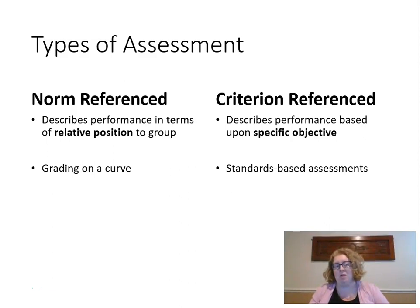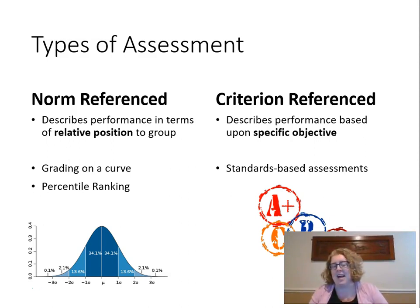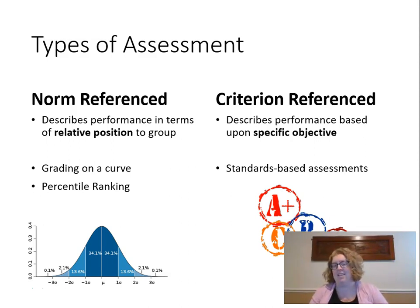Examples of norm-referenced would be grading on a curve or percentile ranking, versus criterion-referenced which is standards-based. When you see things like an IQ test or you are in the 95th percentile, that would be norm-referenced. Criterion-referenced is pretty much everything else in school — when you get 95% correct on a test, that's criterion-referenced.